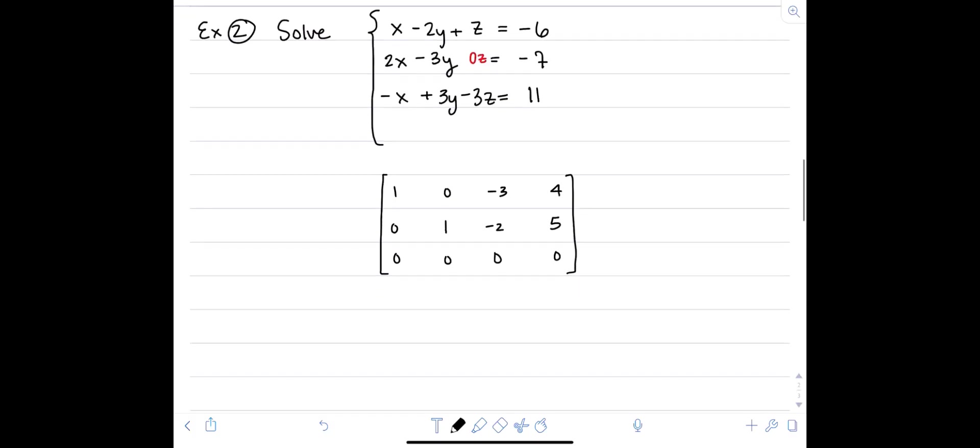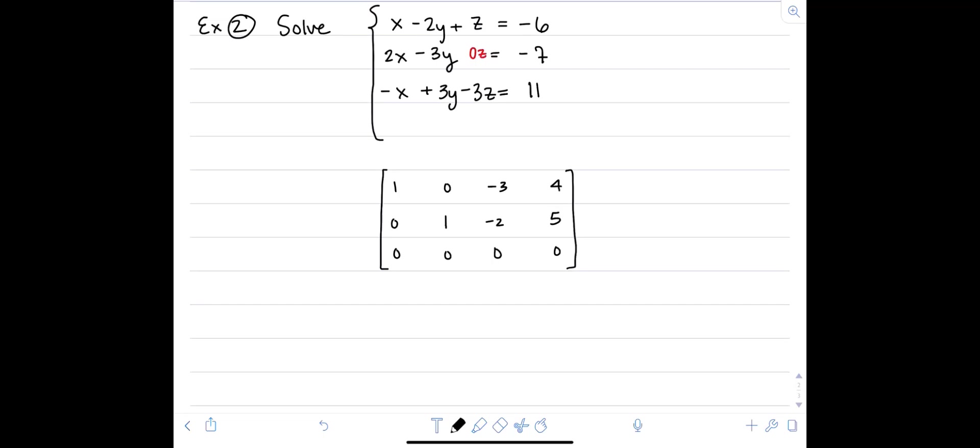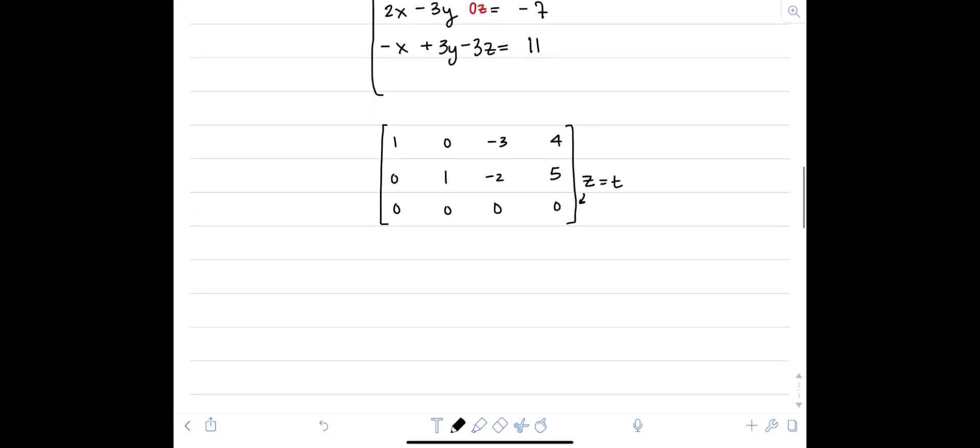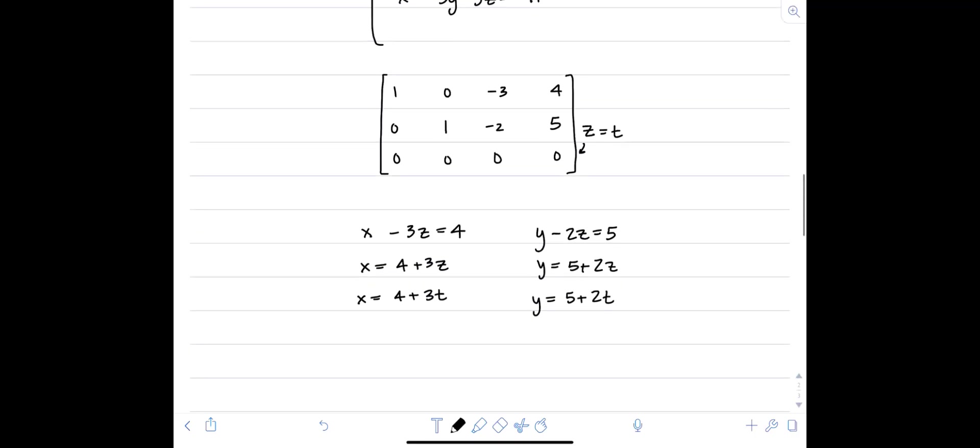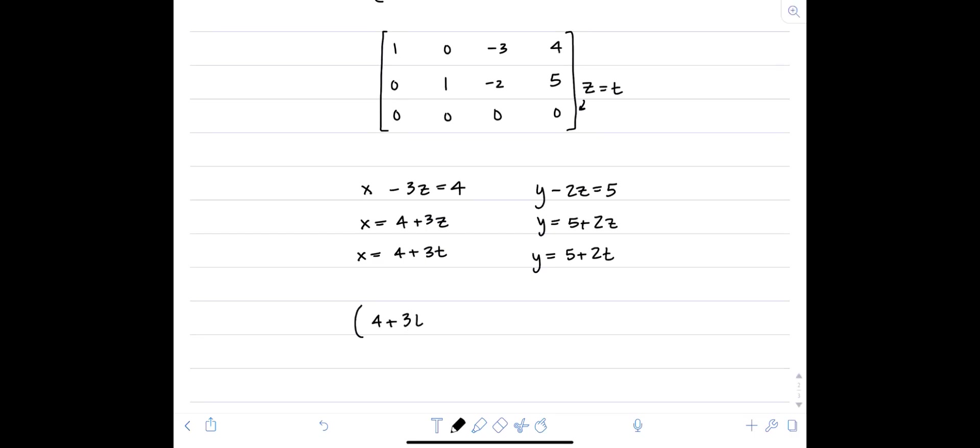So again, it looks like we have one independent variable, and that independent variable is z. So we'll let z equal t. And then we'll parameterize x and y in terms of t. So if x minus 3z equals 4, then x equals 4 plus 3z. So x equals 4 plus 3t. Similarly, if y minus 2z equals 5, then y equals 5 plus 2z. So y equals 5 plus 2t. And there's our solution set.